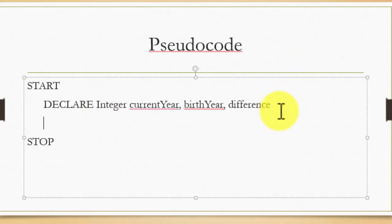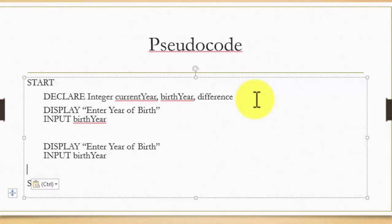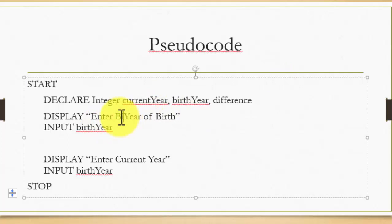The next step is to take input from the user. Input is basically the combination of a display statement and an input statement — together called a prompt. So we write: display 'Enter birth year', then input birthYear. Then I'll copy and paste that statement below, changing it to display 'Enter current year', and update the second input variable to currentYear.